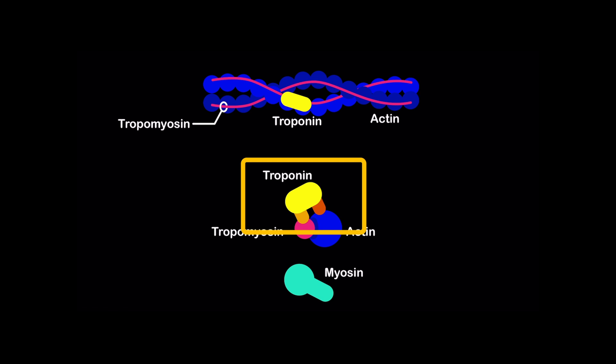The correct answer is calcium, and it's okay if you don't know that. I'm going to go through the explanation, and I want you to think about how you can integrate the details into what you already know. Troponin is actually a three-protein complex comprised of troponin C, I, and T. Each has a different role. Troponin I directly blocks the binding site on actin with tropomyosin. Troponin T keeps troponin anchored to tropomyosin. And finally, troponin C binds to calcium. With these details, it's really obvious to see why calcium is the answer.